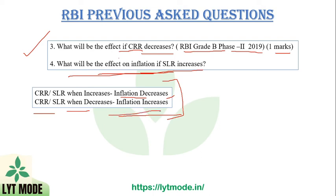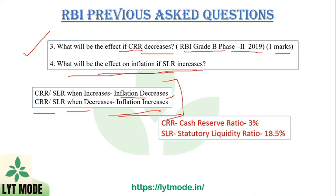CRR is 3% and SLR is 18.5%. CRR, SLR, reverse repo rate, repo rate, and open market operations are all quantitative methods of the Monetary Policy Committee used by the RBI to control inflation. These are very important topics — mastering them can help you score 4 to 7 marks in the RBI exam.